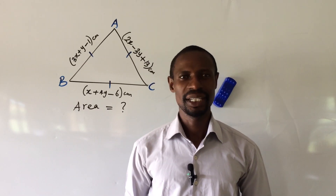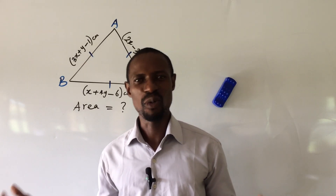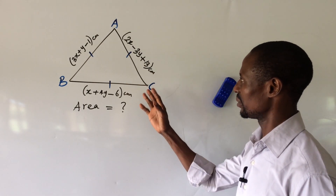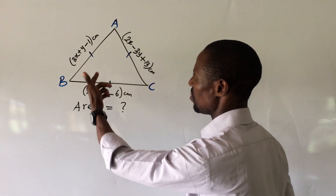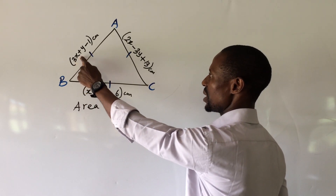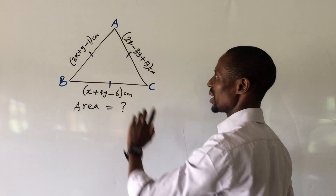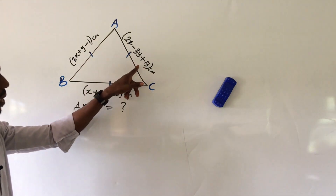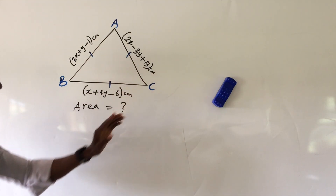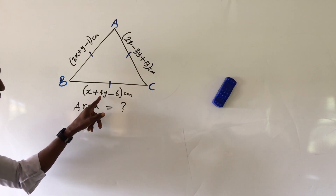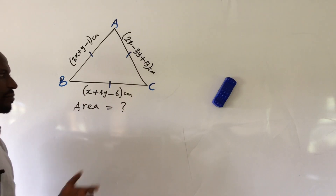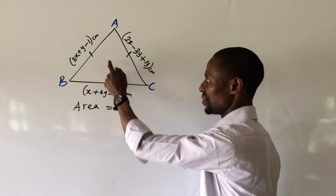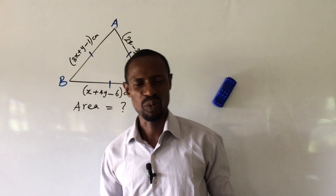Welcome everyone to my channel. Today we have a wire question. The question is a triangle and the sides are given in the form of expressions. Here we have 3x plus y minus 1 cm. The other side is 2x minus 3y plus 13 cm. And the base is x plus 4y minus 6 cm. From the symbols shown, we can see it is an equilateral triangle.